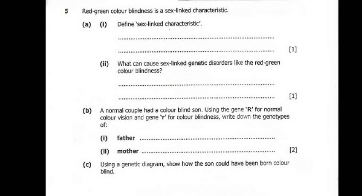We continue with our biology paper 2, 2022 GCE paper. Now we are doing question 5, which reads: Red-green colorblindness is a sex-linked characteristic. And then A1 says: define sex-linked characteristic.